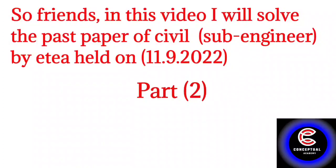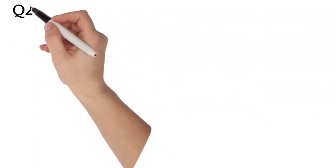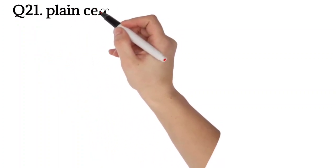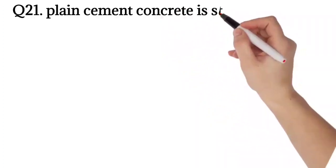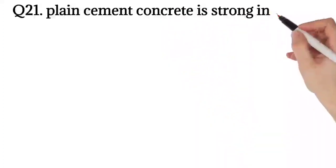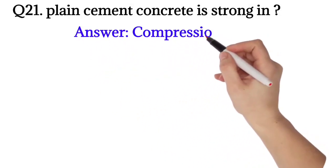So without wasting time, let's start the video. In this video we start from question number 21 because we already solved up to question 20 in part 1. Question 21: Plain cement concrete is strong in compression. So the right answer is compression.